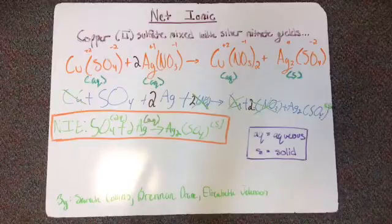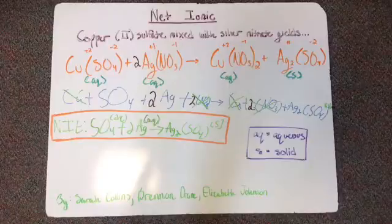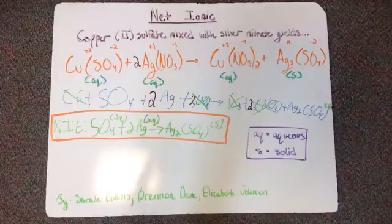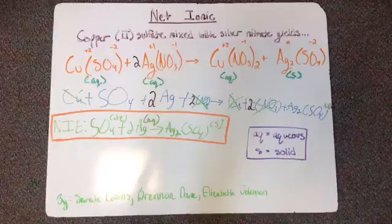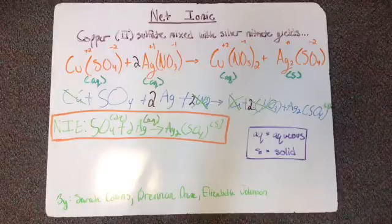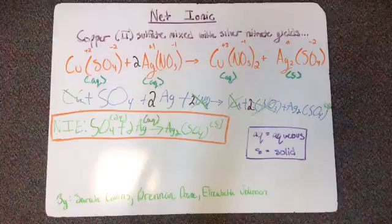Plus Ag, silver, positive 1 charge, and SO4 sulfate, which has a negative 2 charge. Ag has two more silvers because of the positive 1 with the negative 2 charges.